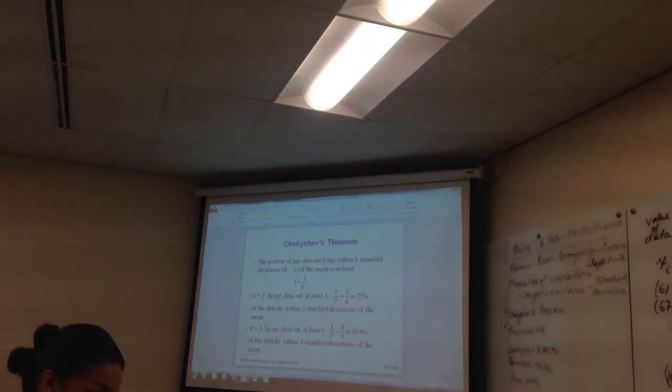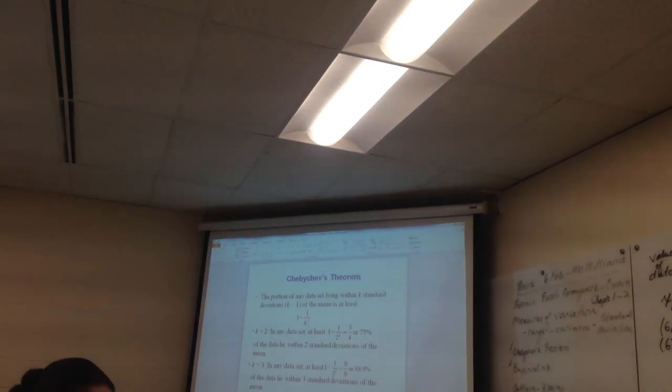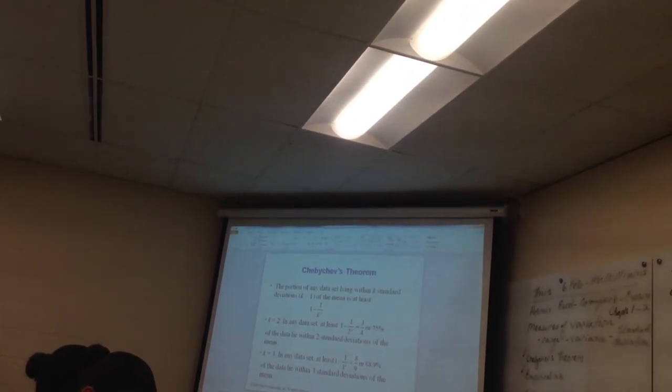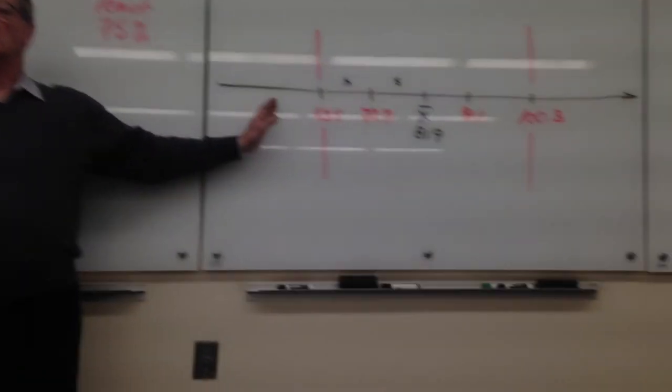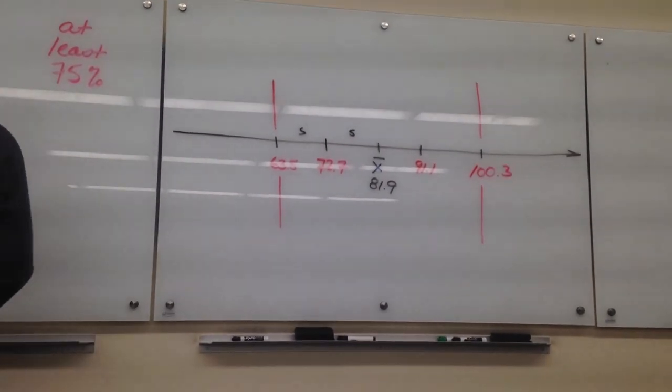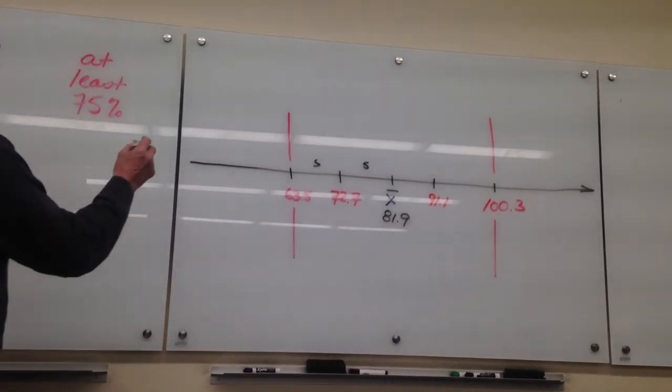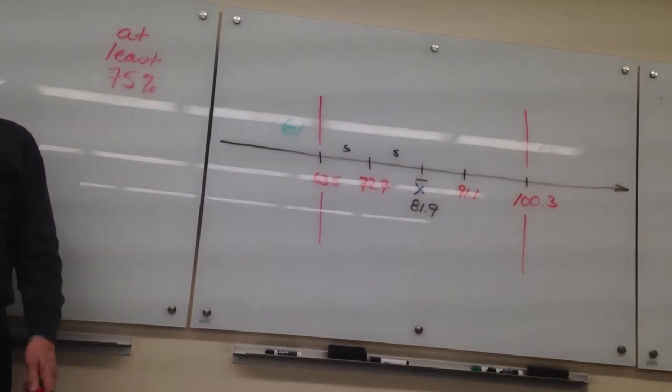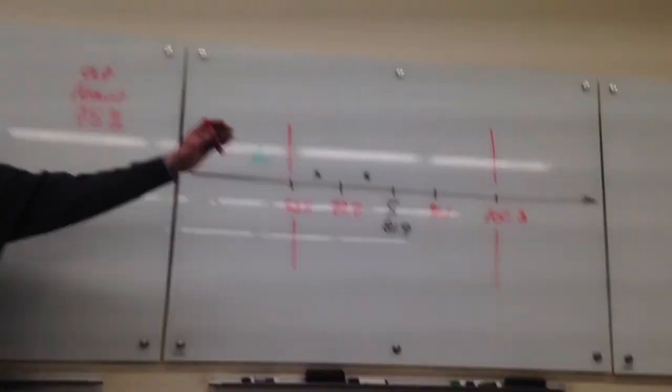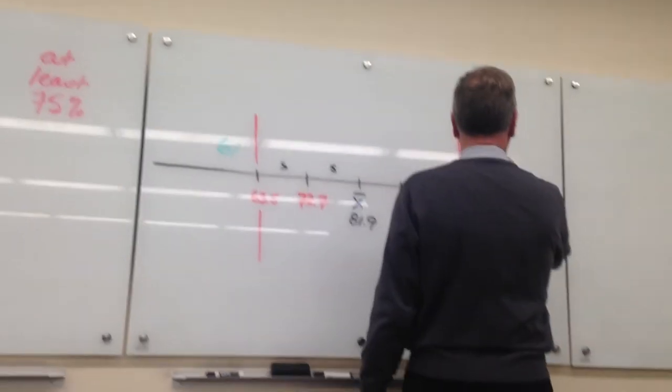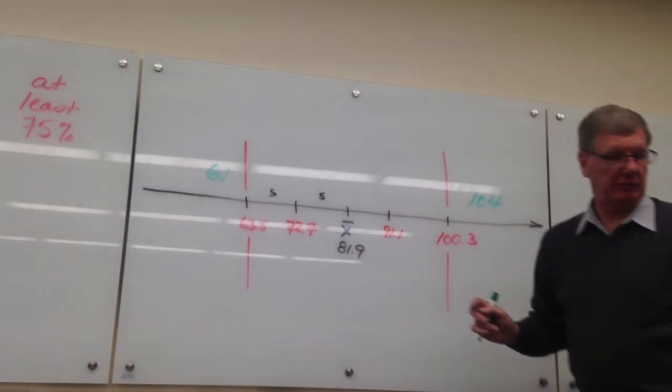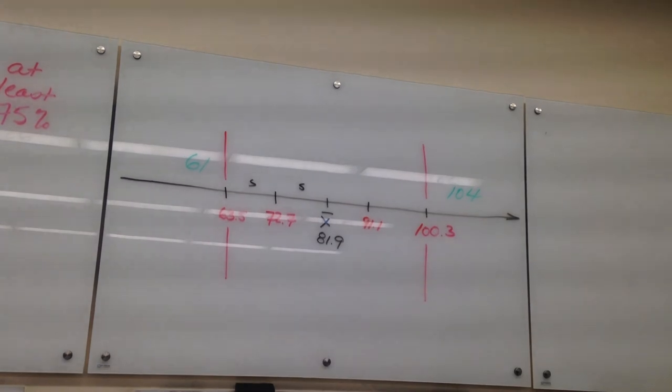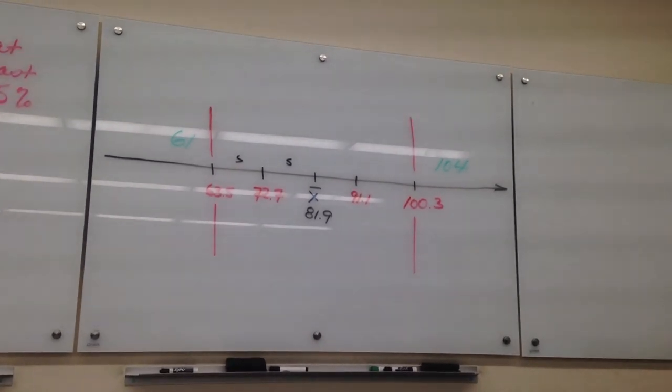Stacy says yes. Okay, what data points do not fall in that interval for us? Well, what's outside of here? Do I have a data point that's less than 63.5? Sixty-one. Sixty-one, right? So sixty-one doesn't make it in there. Is there any others that are lower than 63.5? Do I have anything on the right that doesn't fall? 104. So how many pieces out of the 30 pieces of data that we have falls in that range? Twenty-eight out of the 30, right? Is that at least 75%?